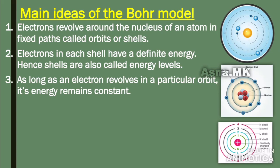Rutherford's planetary model had drawbacks, but in Bohr's model, the electrons spin in their orbits and the energy is given in a defined way — both for large and small models.